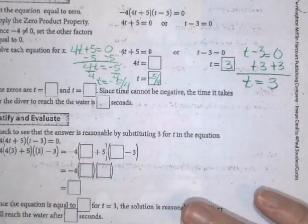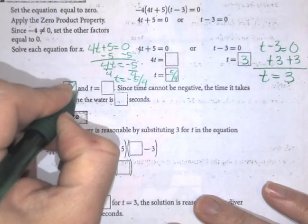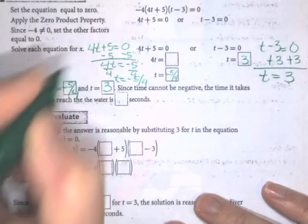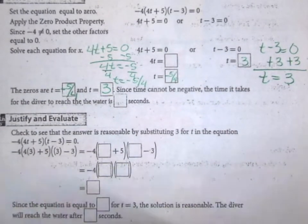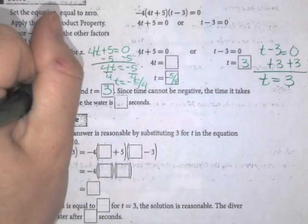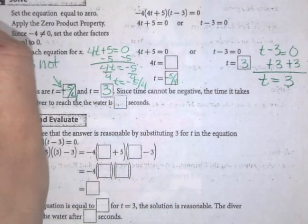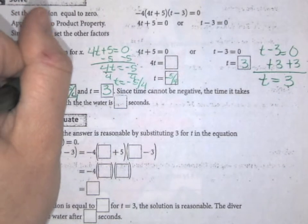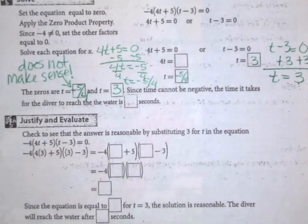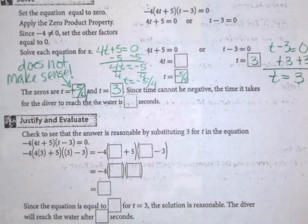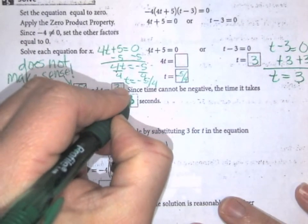So the zeros are when t = -5/4 and t = 3. But since time cannot be negative, this does not make sense. When you are solving quadratic functions, oftentimes one of your values will not make sense in the context of the problem. Therefore, the time it takes for the diver to reach the water is three seconds.